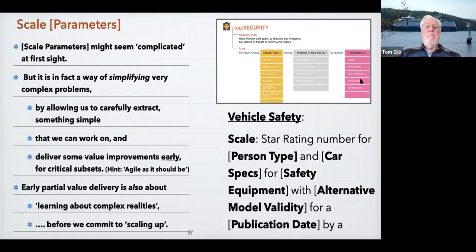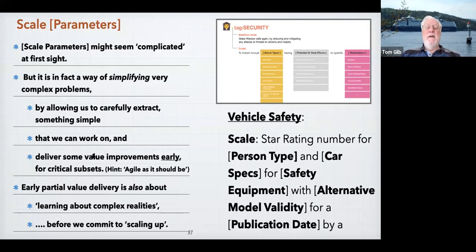I can extract something simple. The word 'extract' translates to: find a valuable, simple value delivery step — call it a sprint. We can deliver some value improvements early for critical stakeholders and critical things, like tracing COVID. I call all of this 'agile as it should be.' There's an agile out there which I'm not very happy with — read the 'Value Agile' book, free.